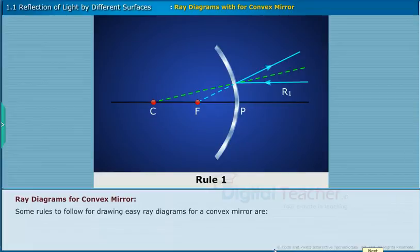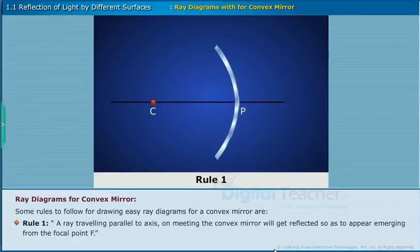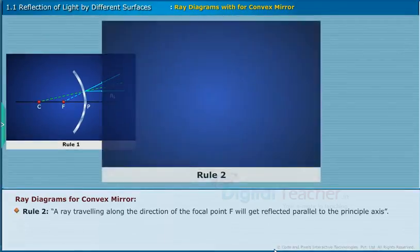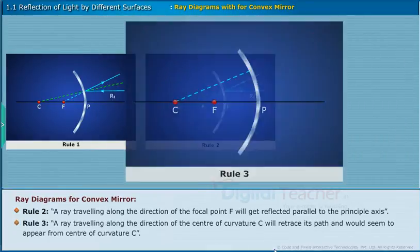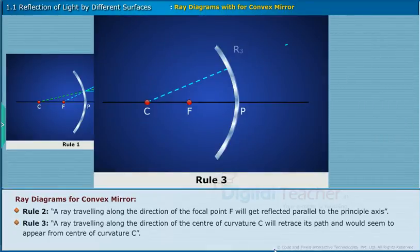Some rules to follow for drawing easy ray diagrams for a convex mirror are: Rule 1 — a ray traveling parallel to the axis, on meeting the convex mirror, will get reflected so as to appear emerging from the focal point F. Rule 2 — a ray traveling along the direction of the focal point F will get reflected parallel to the principal axis. Rule 3 — a ray traveling along the direction of the center of curvature C will retrace its path and would seem to appear from center of curvature C.